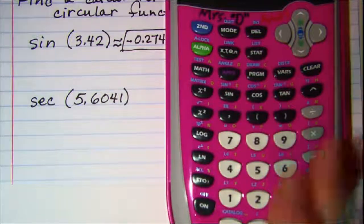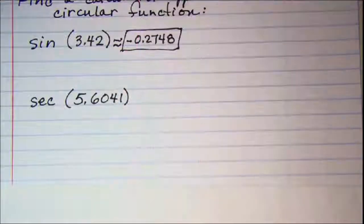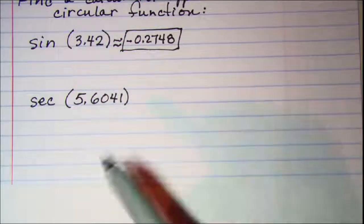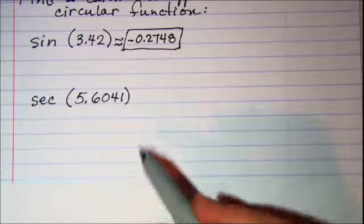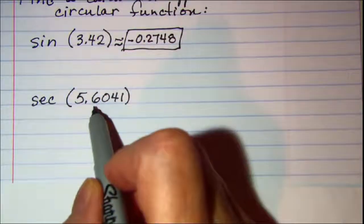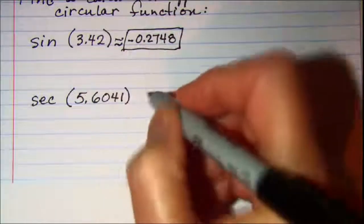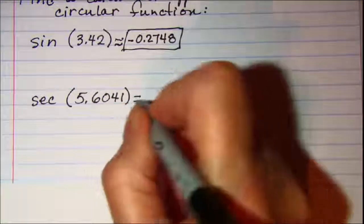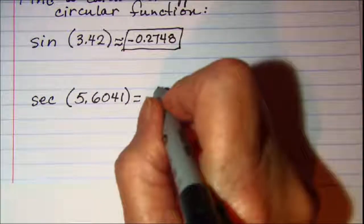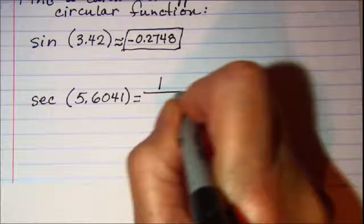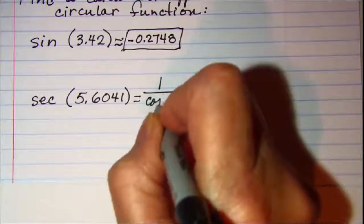and then the inverse trig functions. So we need to do a little manipulation first. We know that the secant is reciprocal of cosine. So this then can be rewritten as 1 over the cosine of that angle.